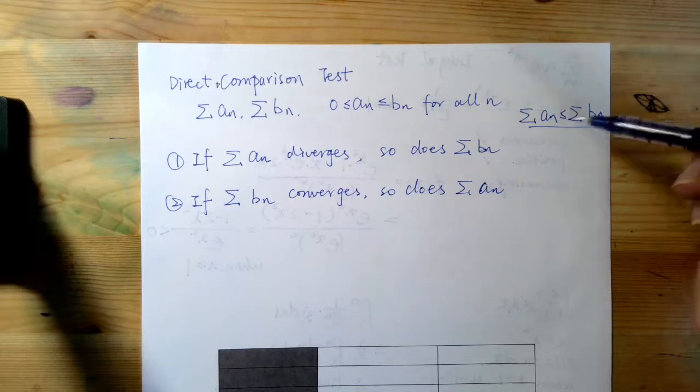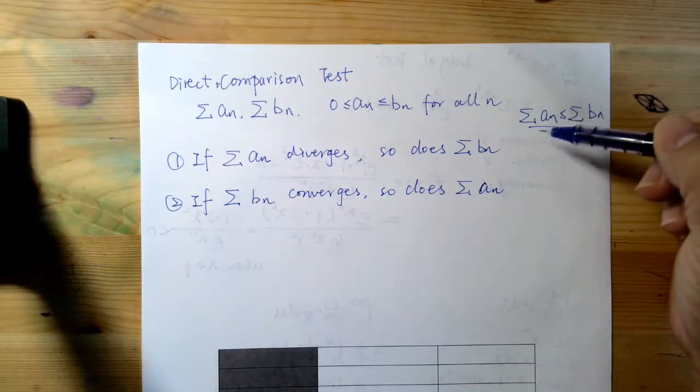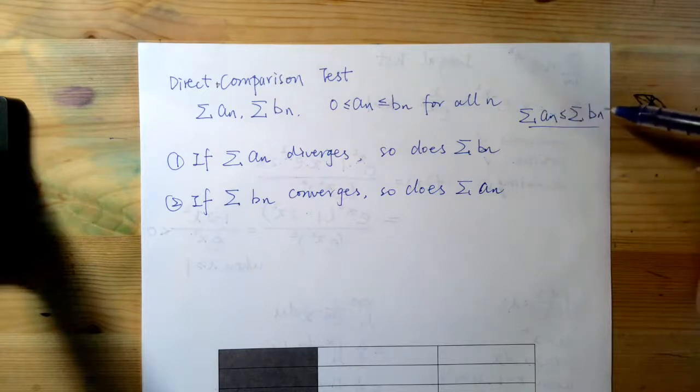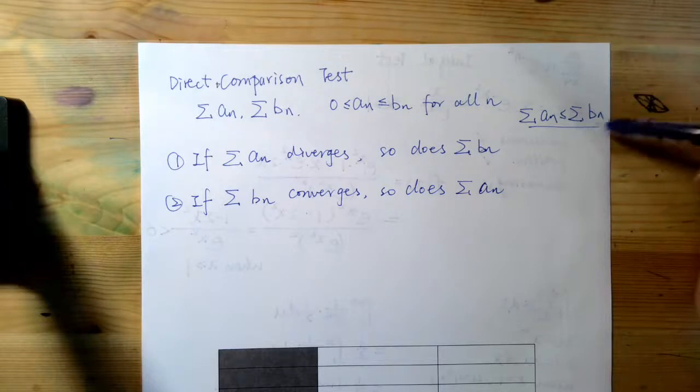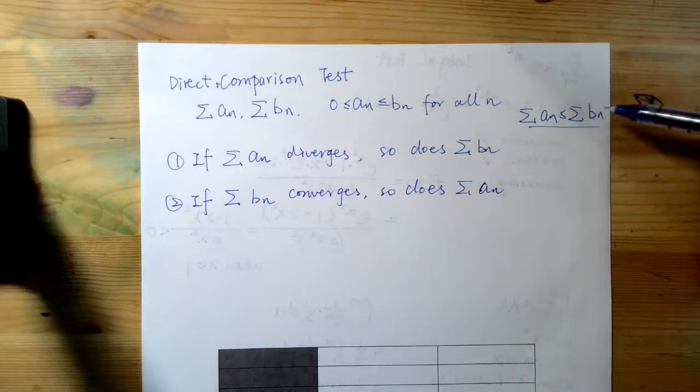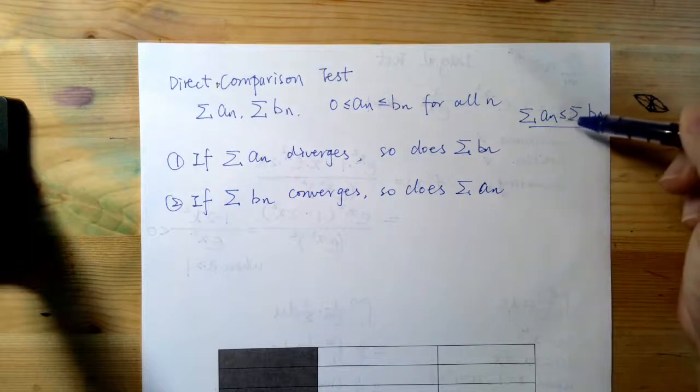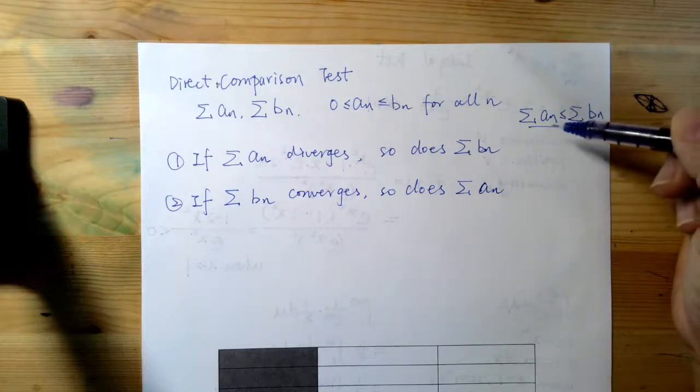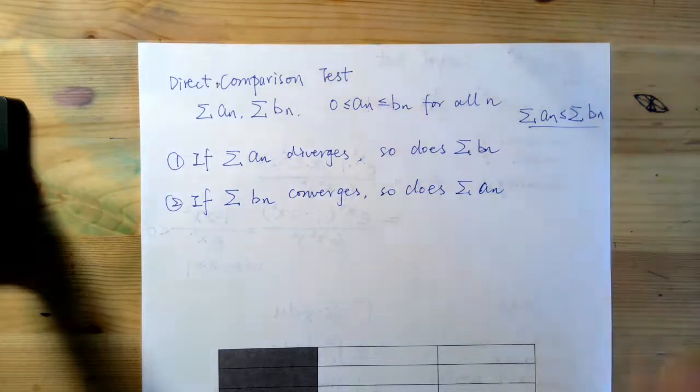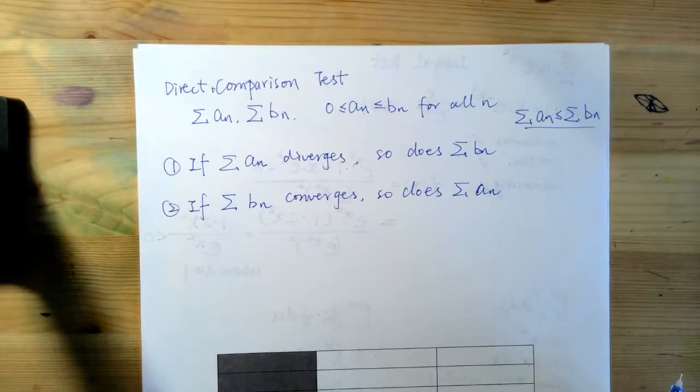Because the larger series is always greater or equal than the smaller series. So if this diverges, it diverges. While if the larger series is convergent, in other words, it's bounded, right? So it's converged to a certain fixed number. And the smaller series, it also converges. So that is the direct comparison test.